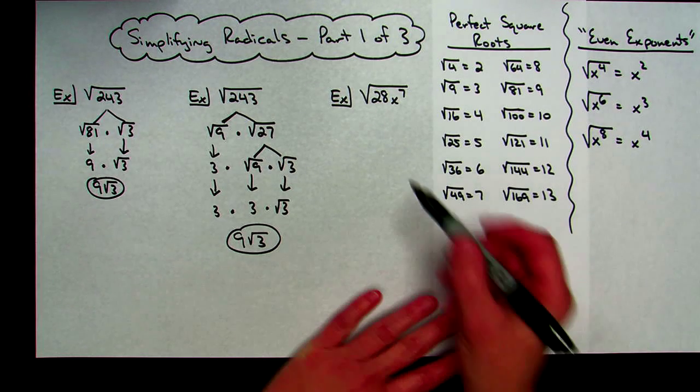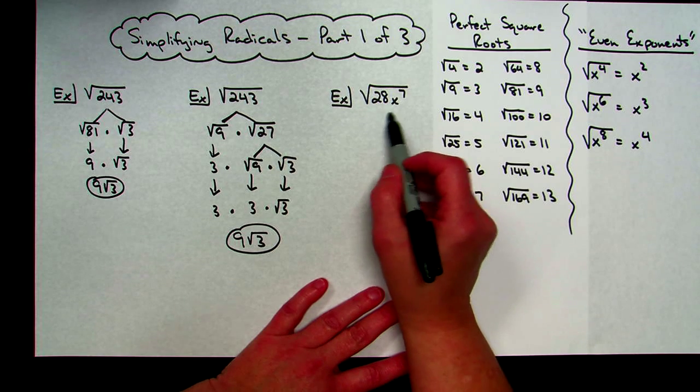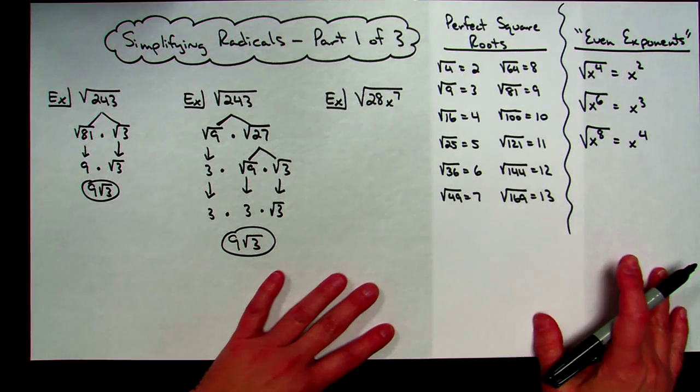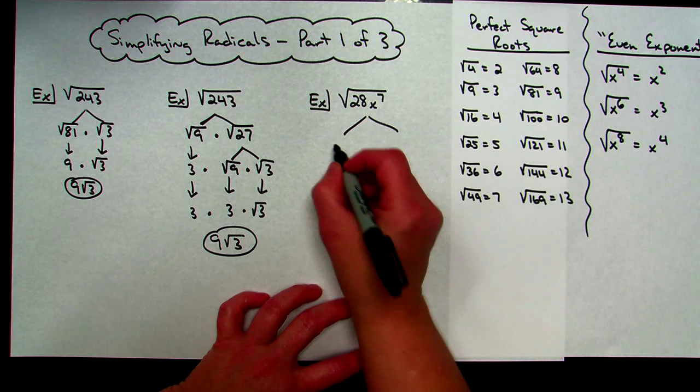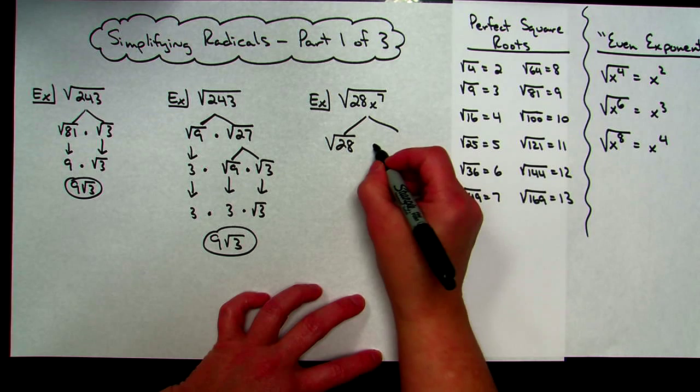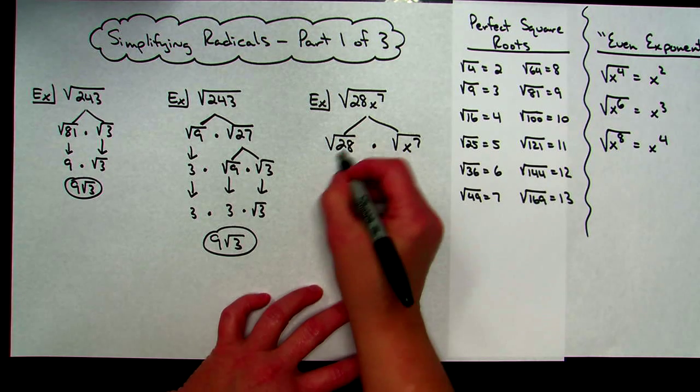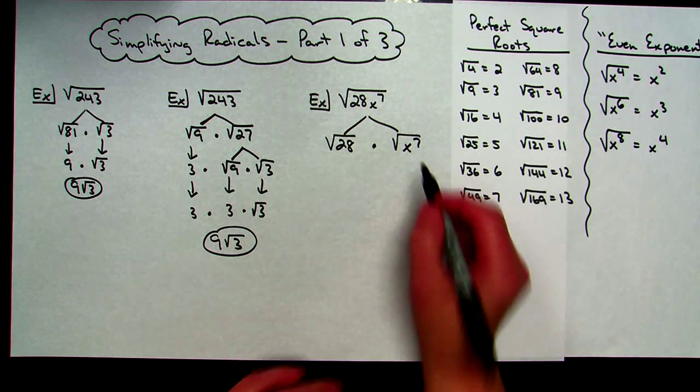Now what I did this one, I threw this one in just because it had some letters in there. Usually I just like to break those up, separate and give myself a little bit more room. I like to just work with the numbers and then work with the letters. So I break that up into the square root of 28 and square root of x to the 7th. And I deal with this just like I have the first two examples, and then I can deal with the letters separately.